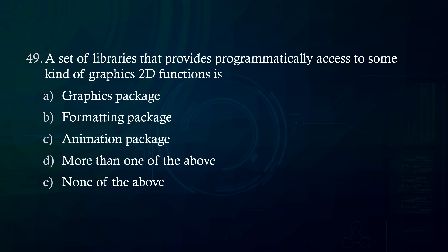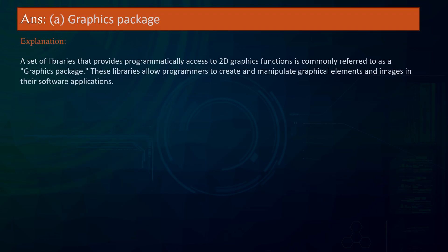A set of libraries that provides programmatic access to 2D graphics functions is: A. Graphics package B. Formatting package C. Animation package D. More than one of the above E. None of the above. Answer: Graphics package. Explanation: A set of libraries providing programmatic access to 2D graphics functions is commonly referred to as a graphics package. These libraries allow programmers to create and manipulate graphical elements and images in their software applications.